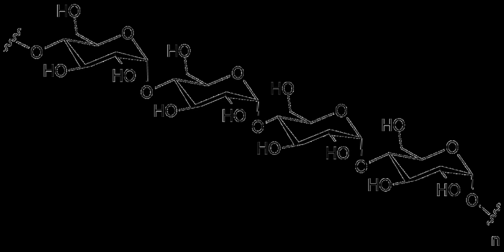Polysaccharides, meanwhile, have a general formula of CX-H2O-Y where X is usually a large number between 200 and 2500. When the repeating units in the polymer backbone are 6-carbon monosaccharides, as is often the case, the general formula simplifies to C6-H10O5-N, where typically 40-N3000.